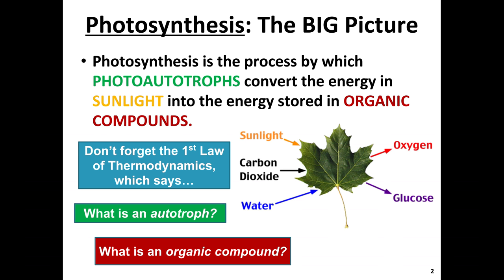What is an autotroph? An autotroph is an organism that is a self-feeder, and they can sustain themselves without taking in energy from any other organisms. This is typically done through the process of photosynthesis or another thing called chemosynthesis. Some examples of photoautotrophs could be plants, algae, even bacteria.